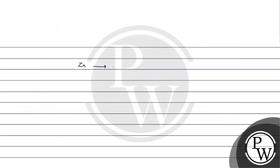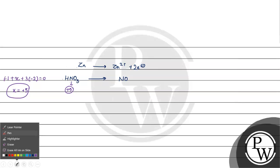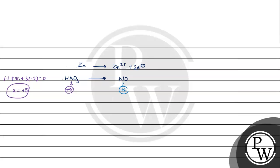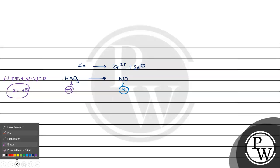What happens here is oxidation. Zinc becomes Zn²⁺. And for nitrogen in NO: oxygen is minus 2, so nitrogen must be plus 2 to keep the compound electrically neutral. The change in oxidation state of zinc is plus 2, and for nitrogen going from HNO3 to NO the change is 3.